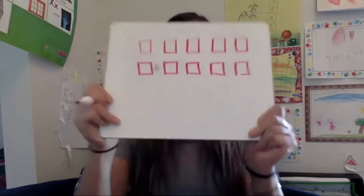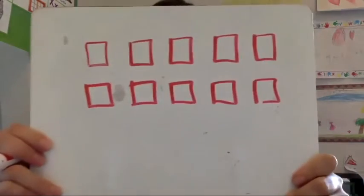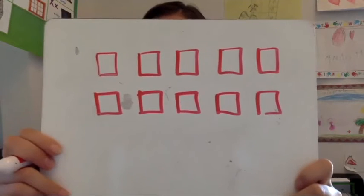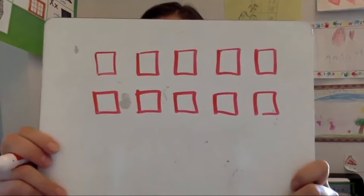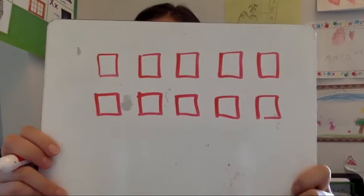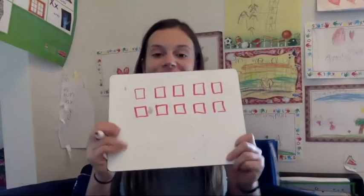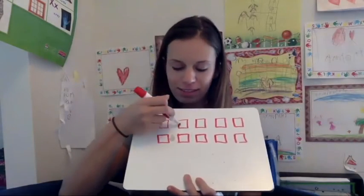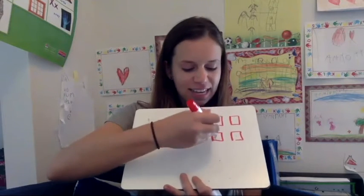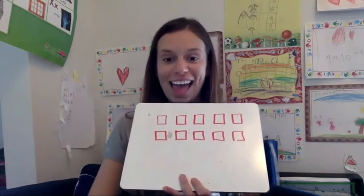How many squares do I have? Count them. That's right, I have ten squares — one, two, three, four, five, six, seven, eight, nine, ten.